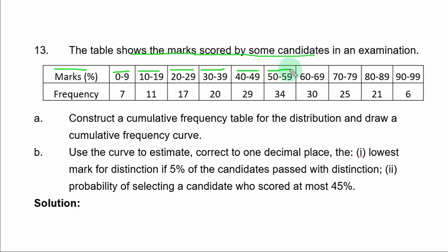50 to 59, 34 candidates. 60 to 69, 30 candidates. 70 to 79, 25 candidates. 80 to 89, 21 candidates. 90 to 99, 6 candidates.